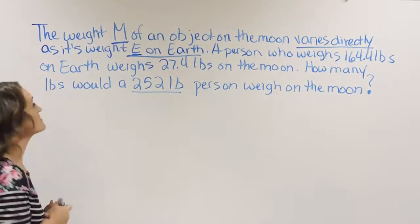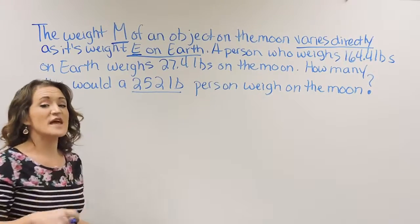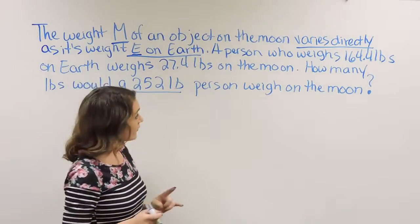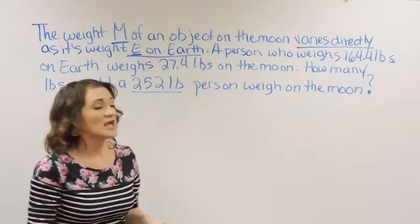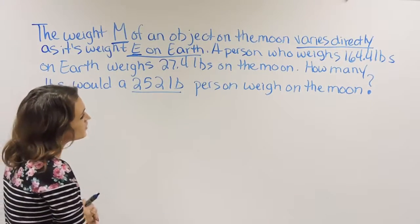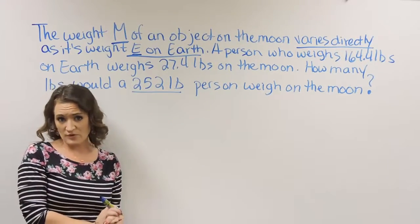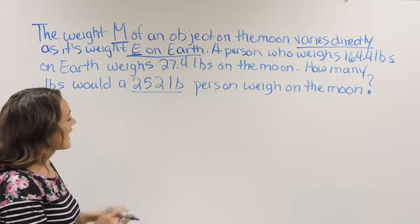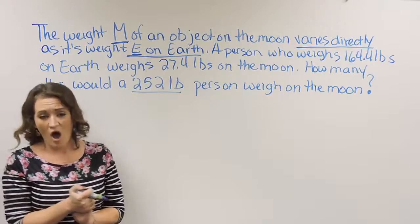This specific problem says the weight M of an object on the moon varies directly as its weight E on Earth. A person who weighs 164.4 pounds on Earth weighs 27.4 pounds on the moon. How many pounds would a 252-pound person weigh on the moon?